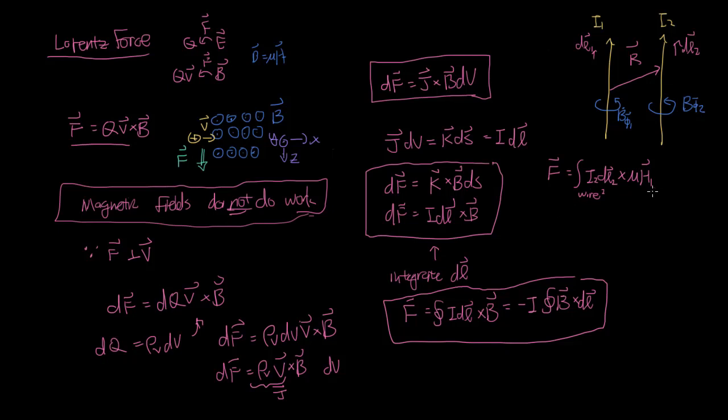Now, remember, we're going to have to use the Bio-Savart law to figure out what the current, what the magnetic field is due to this wire. So if you do that, we're going to get, it's going to rewrite this here, wire 2, I2 DL2, cross, and then if we just plug in the Bio-Savart law, we're going to add up all the components of wire 1, and we're going to have mu I DL1, cross R, all over 4 pi R squared.